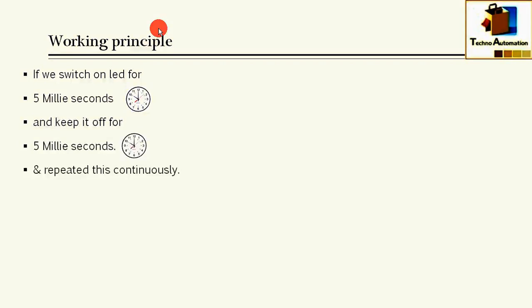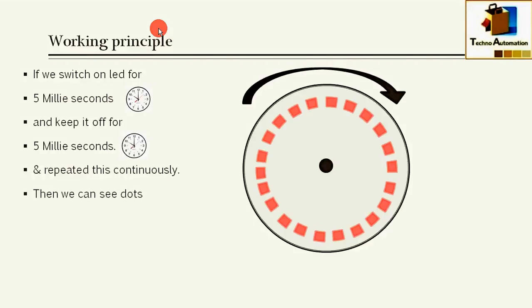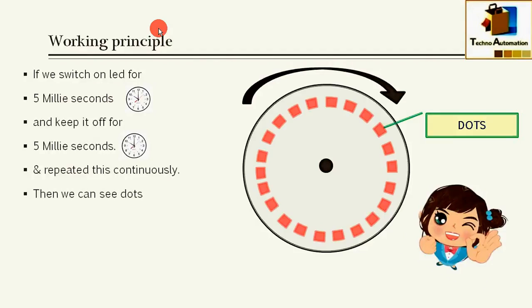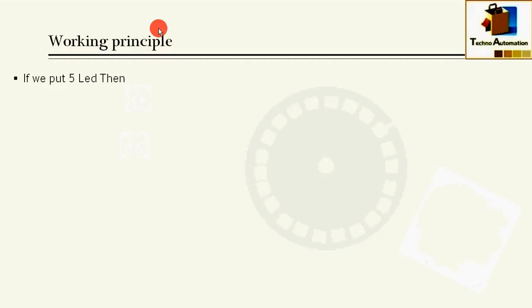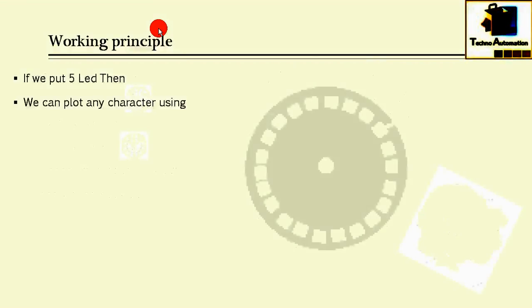If we switch on LED for 5 milliseconds and keep it off for 5 milliseconds and repeat this continuously, then we can see a dotted circle.